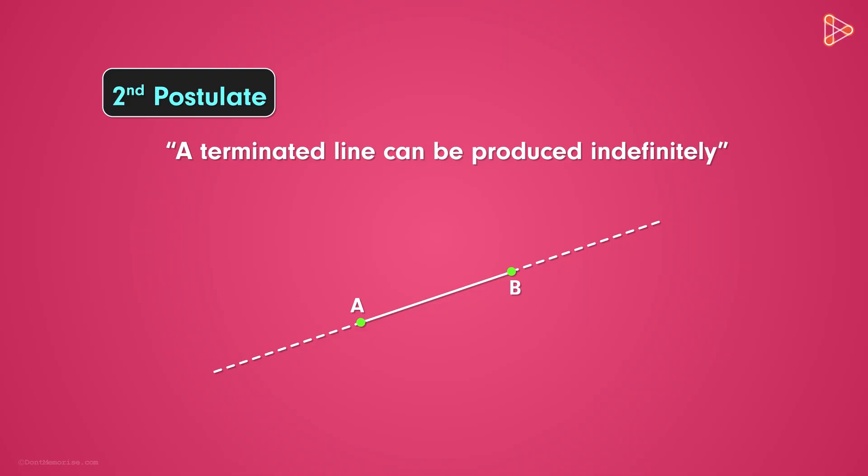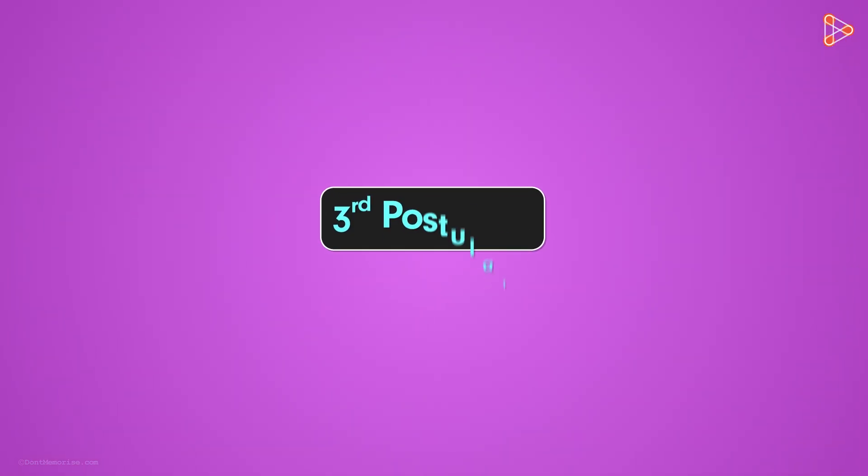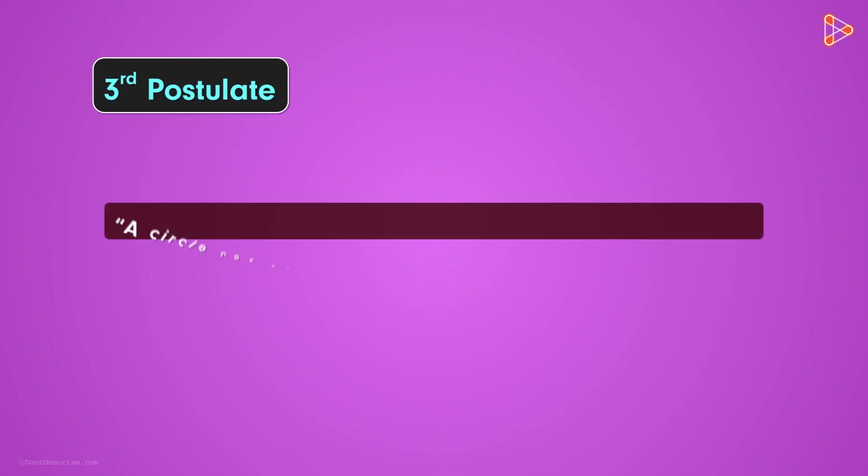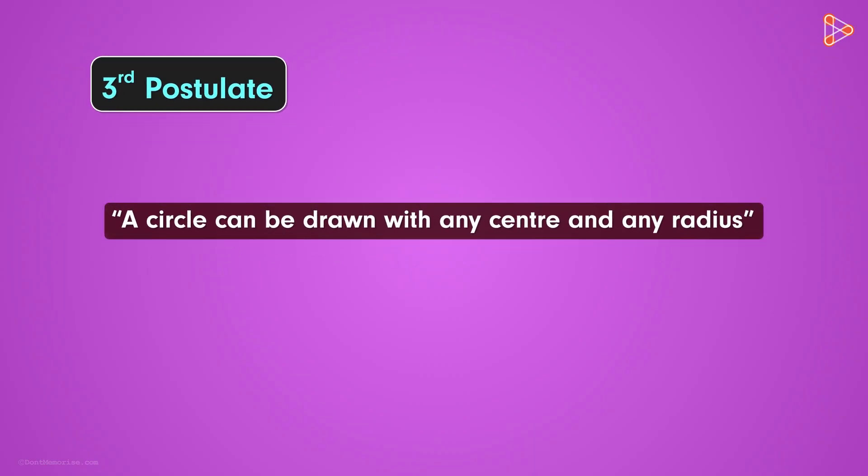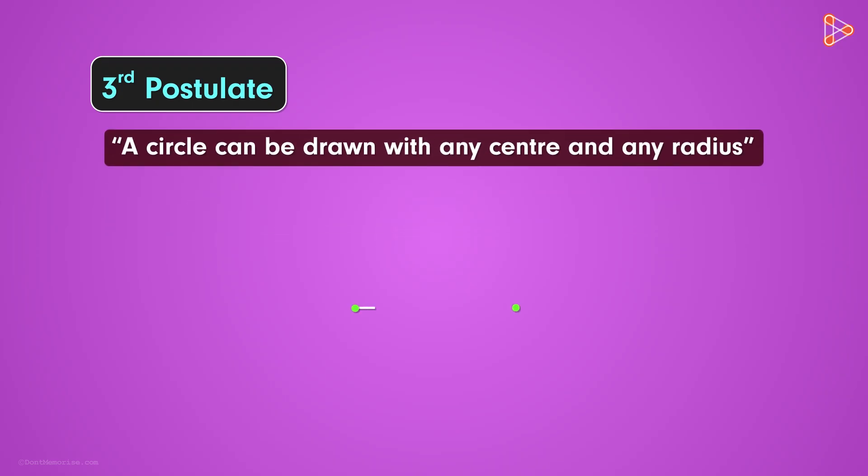What about the next postulate? The third postulate says that a circle can be drawn with any centre and any radius. This postulate is self-explanatory, but for our understanding, let's assume a line segment AB.